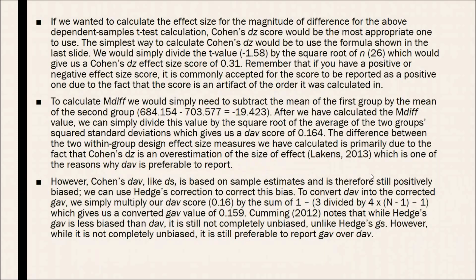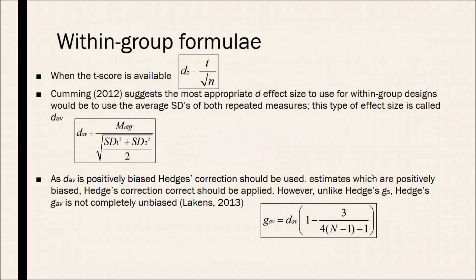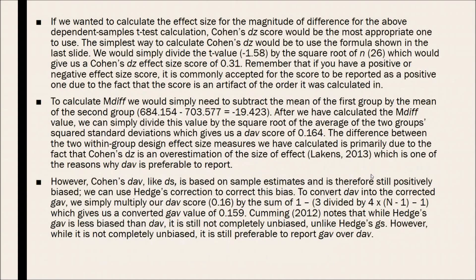So now, if we wanted to calculate the effect size for the magnitude of difference for the above dependent samples t-test calculation, Cohen's DZ would be the most appropriate one to use. The simplest way to calculate Cohen's DZ would be to use the formula, which is simply the t-score divided by the square root of the sample size. So as the t-value is negative 1.58 and the square root of 26 would be something, it would eventually lead us to get a Cohen's DZ effect size score of 0.31. And now remember, if you have a positive or negative effect size score, it is commonly accepted for the score to be reported as a positive one due to the fact that the score is merely an artifact of the order it was calculated in.